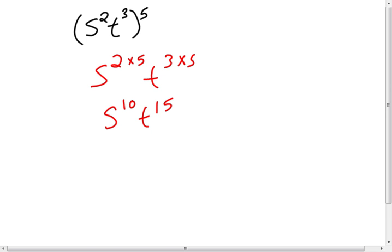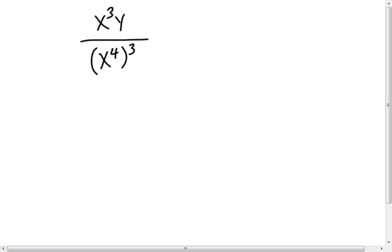The next one is a quotient rule. In order to do this one, we need to evaluate the parentheses in the denominator first, then we can see if we need to do anything with exponents at that point. Rewriting this: x to the third y in the numerator. In the bottom we have a power to a power, so that means we multiply exponents. That changes to x to the twelfth.